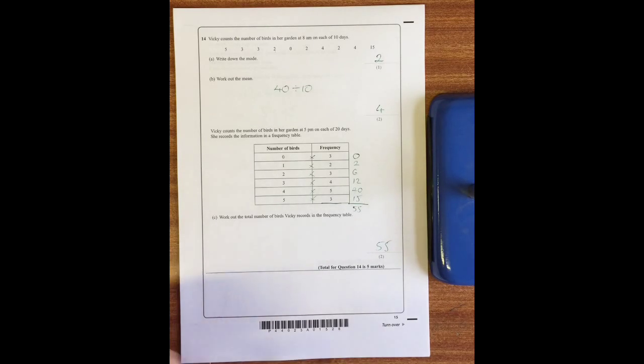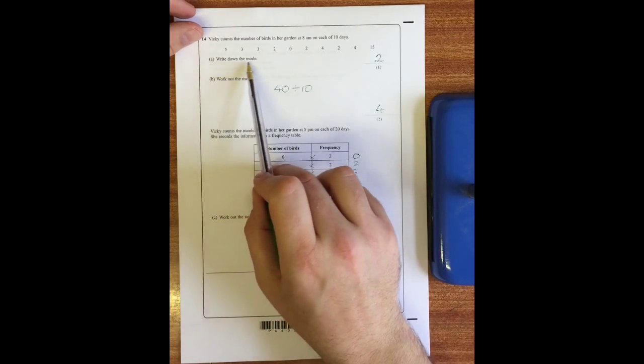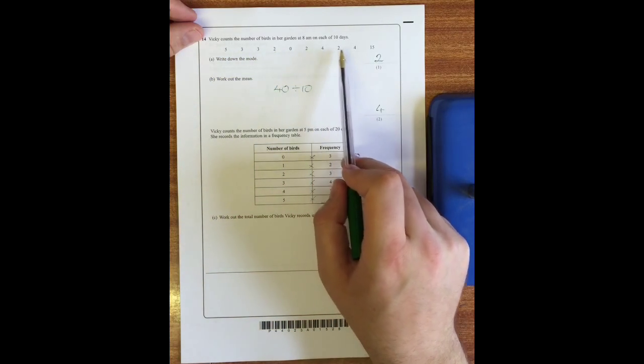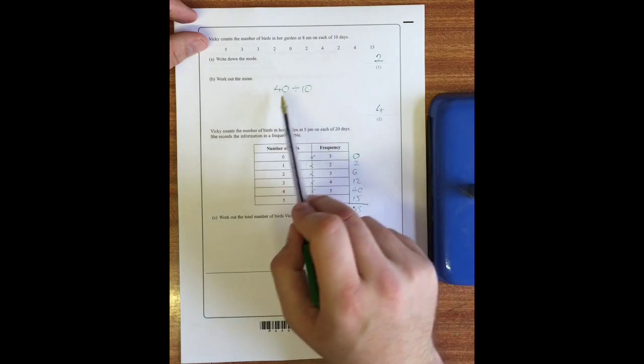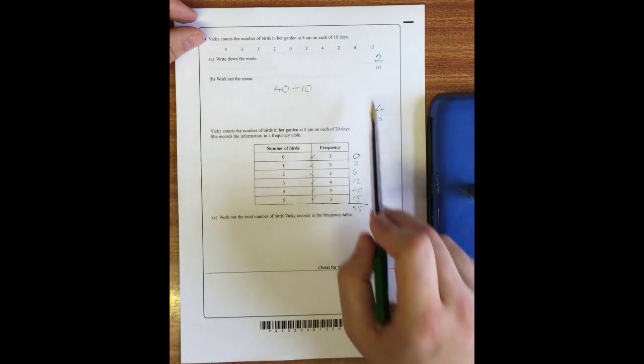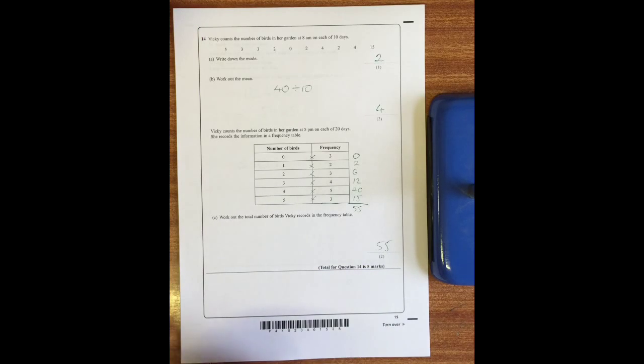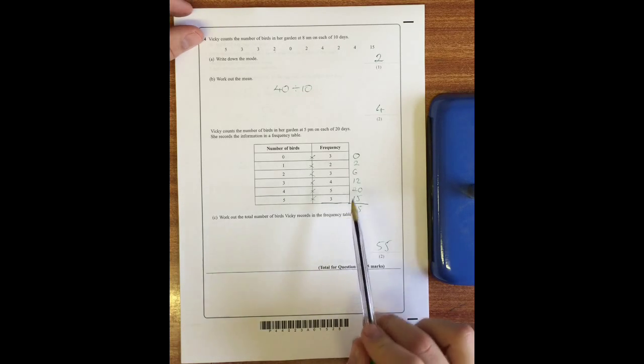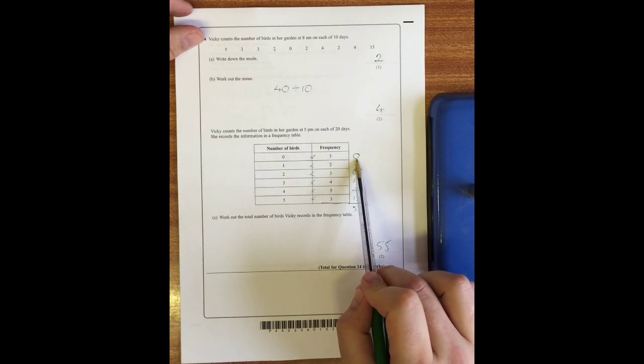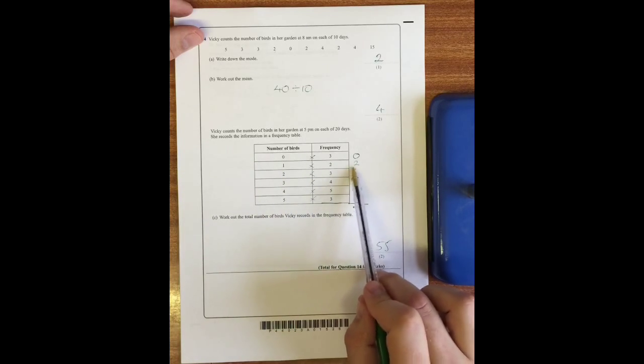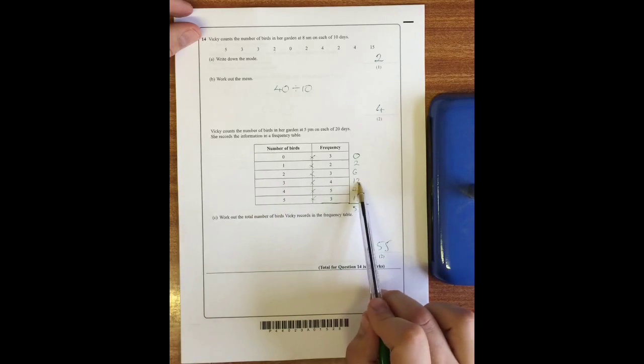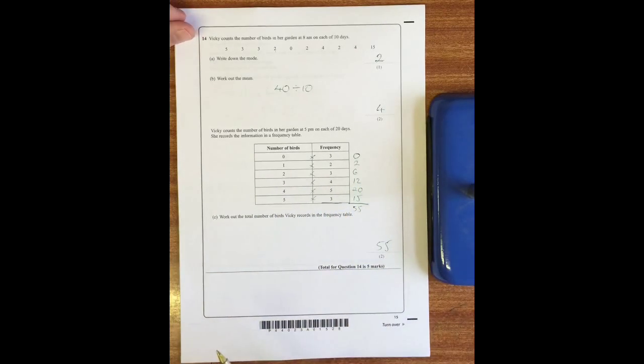Question 14: Vicky counts the number of birds in her garden at 8 a.m. on each of 10 days. Write down the mode. Mode is the one that occurs the most, and you see that two occurs three times so the answer is two. Work out the mean. To work out the mean we add them all together, so if you add all these numbers together you get 40, and divide by how many there are, which is 10 numbers, so the answer is four. Vicky counts the number of birds in her garden at 5 p.m. on each of 20 days. She records information in a frequency table. Work out the total number of birds recorded. Well on three days she recorded no birds, so that's no birds at all. Two days she recorded one, so that's two birds. Three days she recorded two birds, that's six. Four days she recorded three birds, that's 12, and so on. If we add those up you'll get 55 birds.